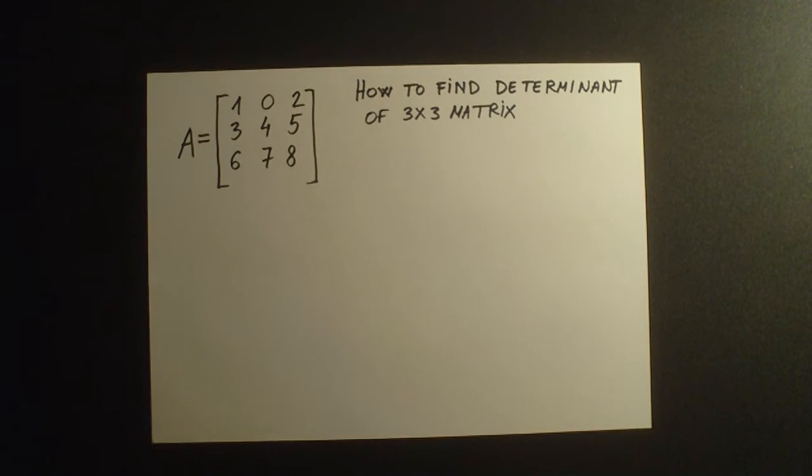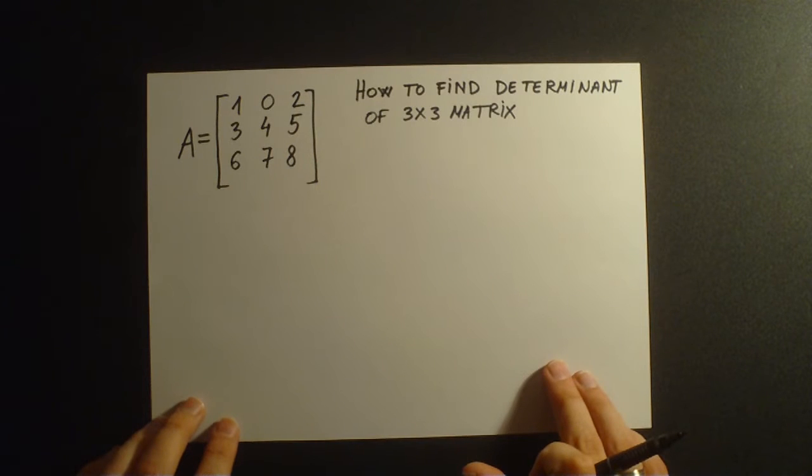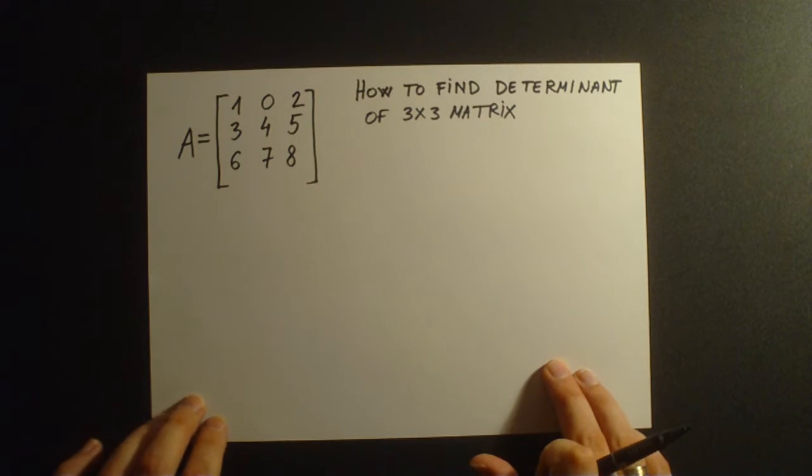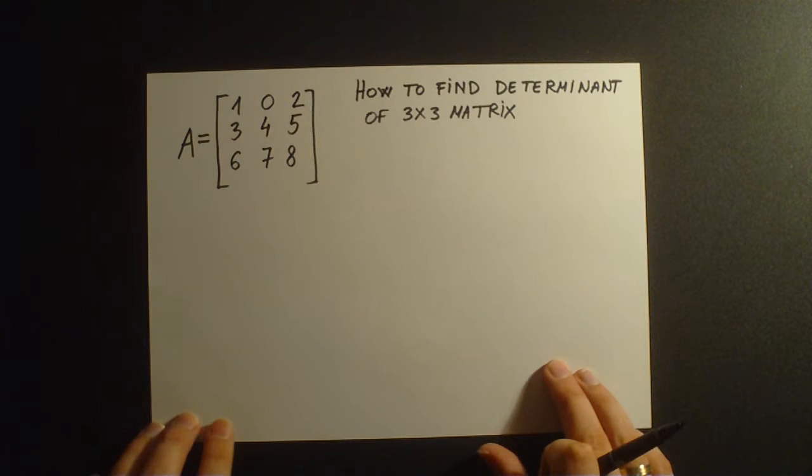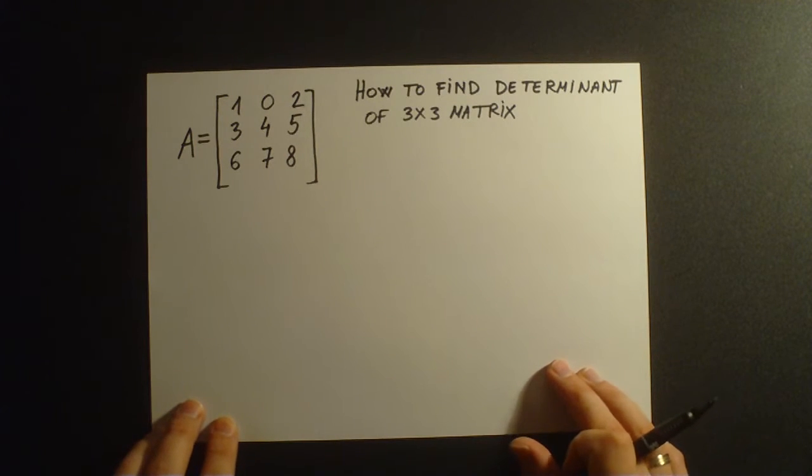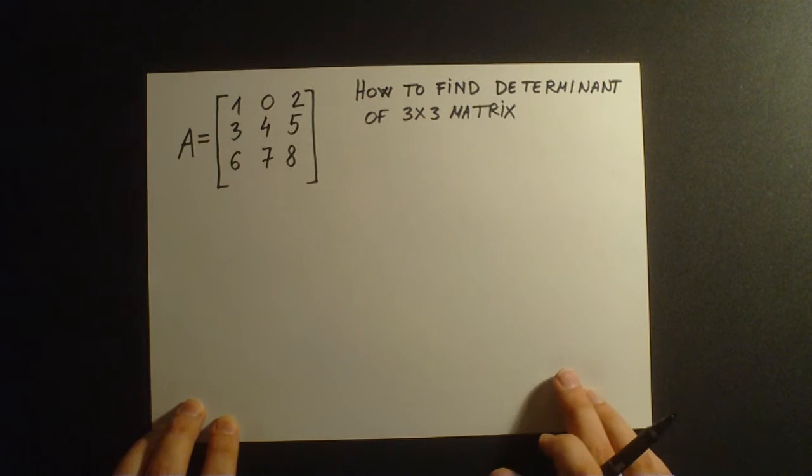Hello everyone, in this video I'm going to show you how to find the determinant of a 3x3 matrix. Here we have one example of matrix and we're going to put those values of the matrix into the brackets of the determinant. Those brackets are very similar to absolute value brackets.